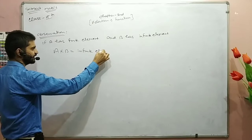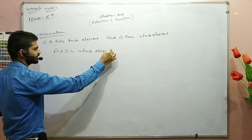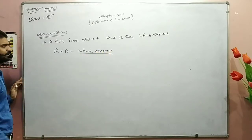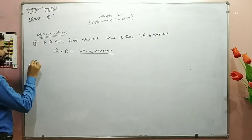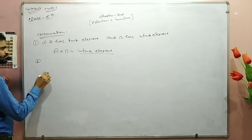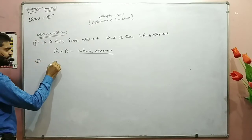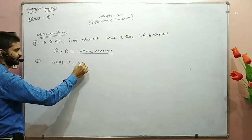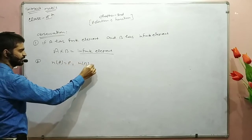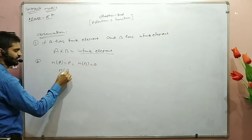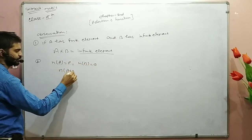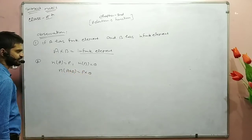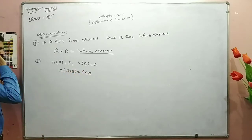If A has an infinite element, then in this observation, as A is a set and B is a set, if A has infinite elements, then A cross B has infinite elements.